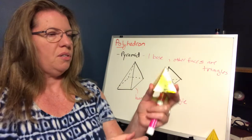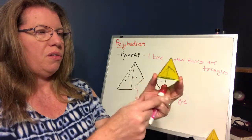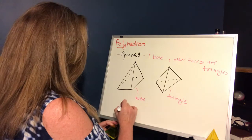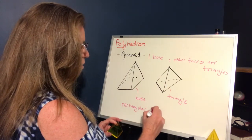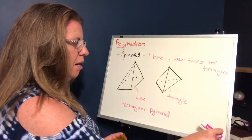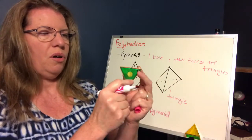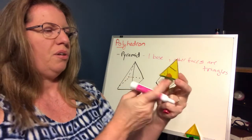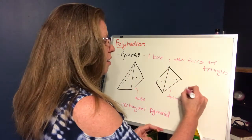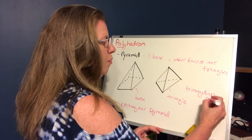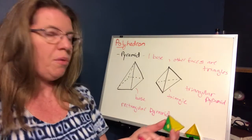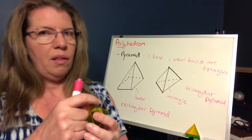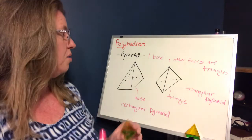This time we have one base, and the other faces — we call them the lateral faces — are triangles instead of rectangles. That's how we tell the two apart. This model's base is a square, so we call it a square pyramid or rectangular pyramid. This model's bottom is also a triangle, and so are the sides — making it a triangular pyramid. So: the pyramid has one base and the other sides are triangles, while the prism has two bases and the other sides are rectangles.